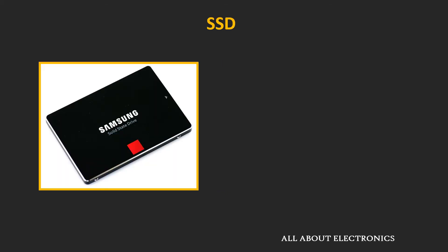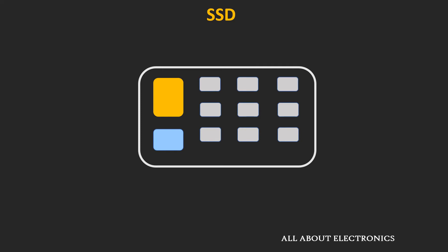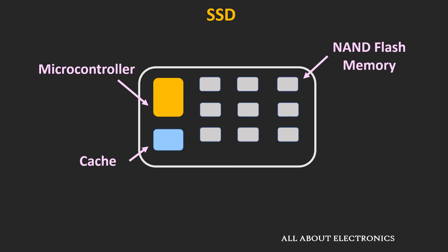On the other end, SSDs are designed using flash memory — specifically NAND flash memory. Since SSDs use flash memory and have no moving parts, they have very fast access times and very low latencies. Apart from the flash memory, an SSD also contains a microcontroller and a small cache memory. The microcontroller is used to access or program the flash memory cells, and the cache memory is used to temporarily store incoming and outgoing data.